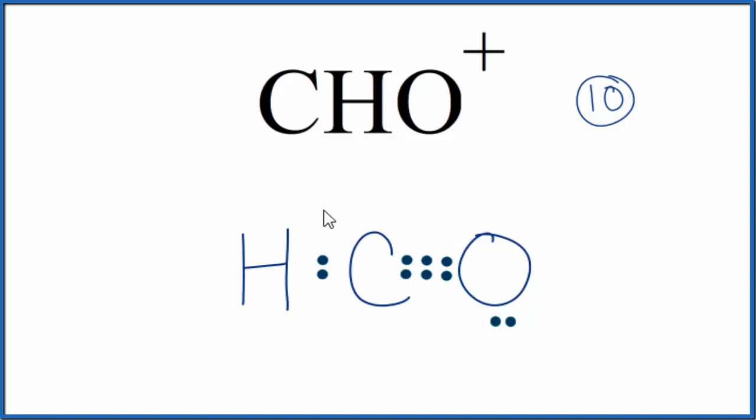So now, the carbon has 8, and the oxygen has 8. Let's move these up here just for symmetry. So this is the Lewis structure for CHO plus. Since it's an ion, we do need to put brackets around it, and then we'll put that positive sign on the outside.